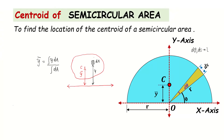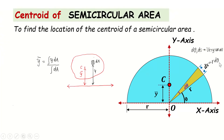If you look at this sector, it approximately appears like a triangle with a base of ds and height approximately equal to r. To find the length of the arc (the base of this triangle), by simple geometry we get ds = r·dθ. Now if I want to find the area of this sector, I call it dA.